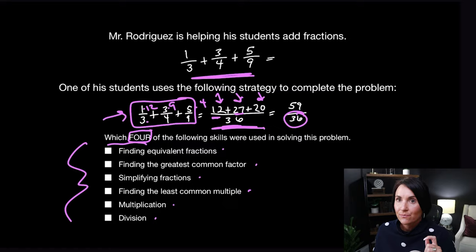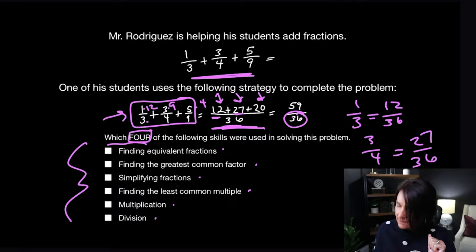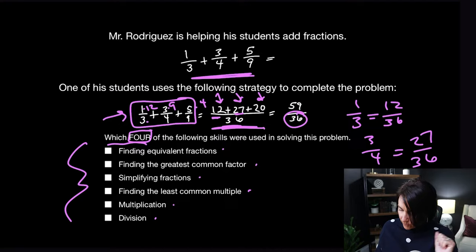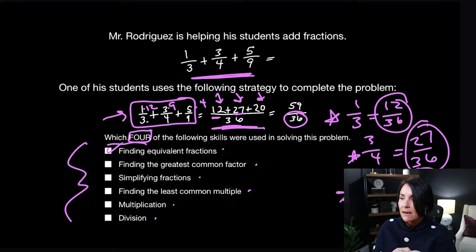Now let's take a look at what skills we used. Did we use equivalent fractions? Yes, because one third equals 12 over 36, three fourths equals 27 over 36, and five ninths equals 20 over 36 — all equivalent fractions. If we were to reduce 12 over 36 we'd get one third, reduce 27 over 36 we'd get three fourths, reduce 20 over 36 we'd get five ninths. So equivalent fractions — check.